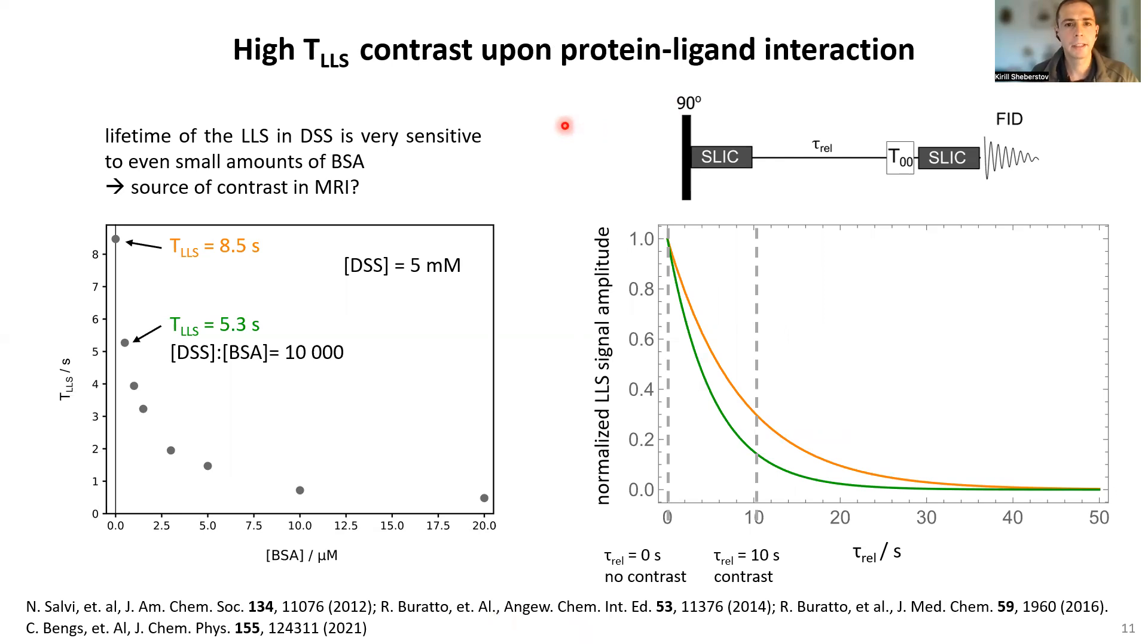In the systems which were observed, we actually found a model system which is DSS. This is a standard molecule people would normally add into a sample to calibrate chemical shifts in proton spectrum. It turns out that this molecule actually interacts with BSA, which is the cheapest and simplest protein.